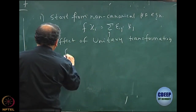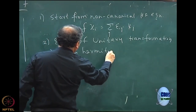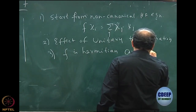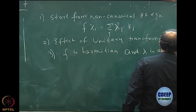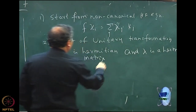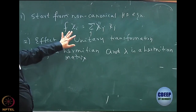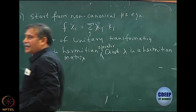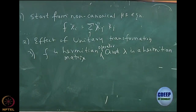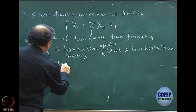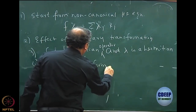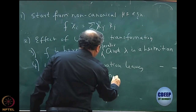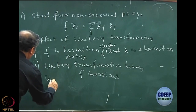I noted that F is Hermitian — that is the first key observation. And lambda is a Hermitian matrix. This is preserved in any basis; it does not matter what the basis is, as long as the equation is satisfied. The Fock operator is Hermitian and lambda is a Hermitian matrix. Then I showed that unitary transformation leaves F invariant, and unitary transformation also retains the orthonormality of the spin orbitals.